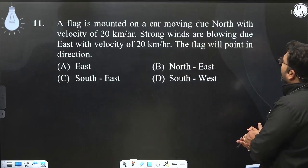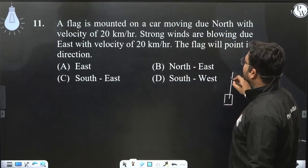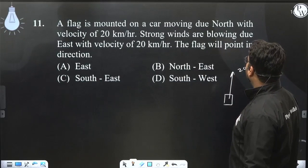The other question is, a flag is mounted on a car. Now, the car is going north at 20 kilometers per hour. This is the velocity of the car.